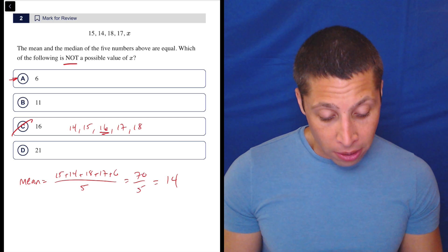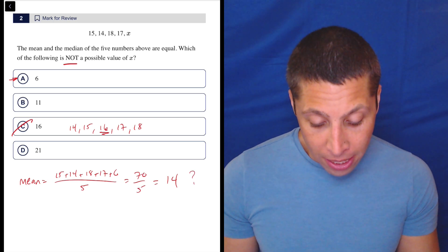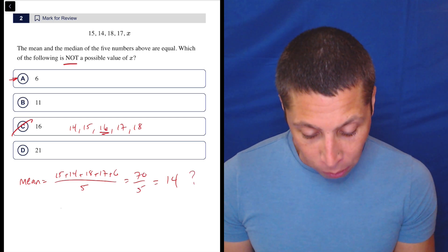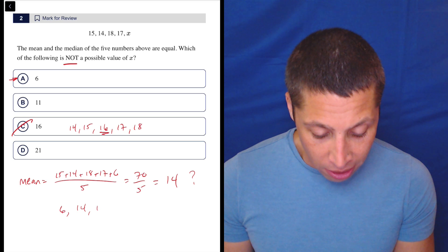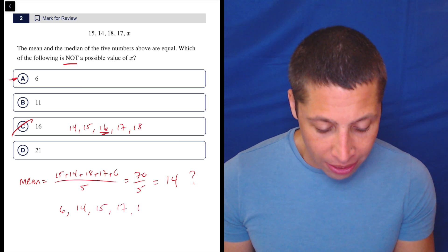So that is a number in the set. So could this be the median? Let's see. If we rearrange these things, we'd have 6, 14, 15, 17, 18.